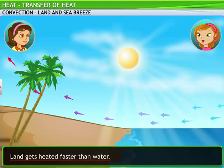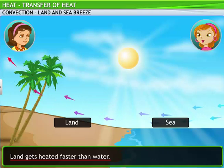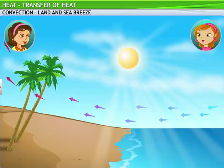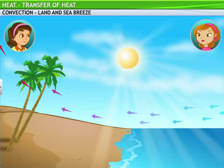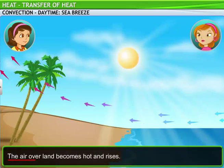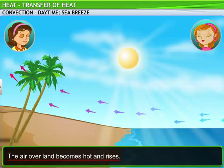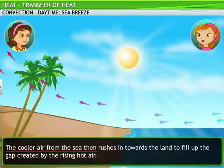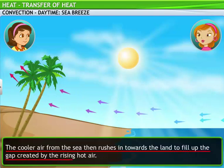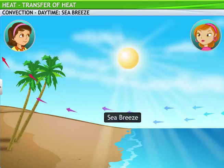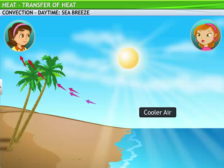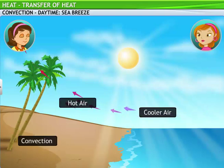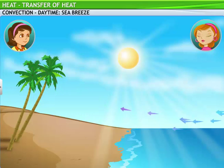Similarly, the temperate weather in places near the sea can be explained. Land near the sea gets heated faster than water. Solids heat up faster than gases and liquids as well. During the day, the air over the land becomes hot and rises, creating a low pressure area between the land and the hot air. Cooler air from the sea then rushes in towards the land to fill up the gap created by the rising hot air. This is sea breeze. The cooler air in the upper atmosphere moves down towards the sea to complete the cycle. Due to this cycle, land near a seashore stays cool throughout the day. This is nature's way of showing us convection.